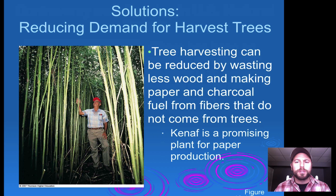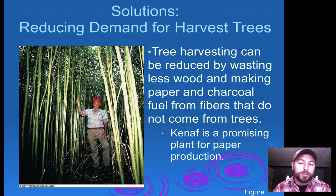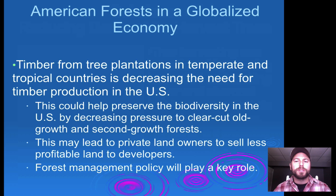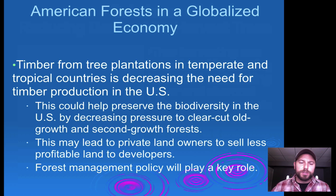There are solutions for reducing demand for harvested trees. Bamboo can be grown and used for clothing, paper, and other products. Tree harvesting can also be reduced by wasting less wood, using less paper, and making charcoal fuel from non-tree fibers like bamboo or kenaf, which is also a promising plant. In a globalized economy, timber from tree plantations in temperate and tropical countries is decreasing the need for timber production in the United States, which could help preserve biodiversity by reducing pressure to clear-cut old-growth forests.